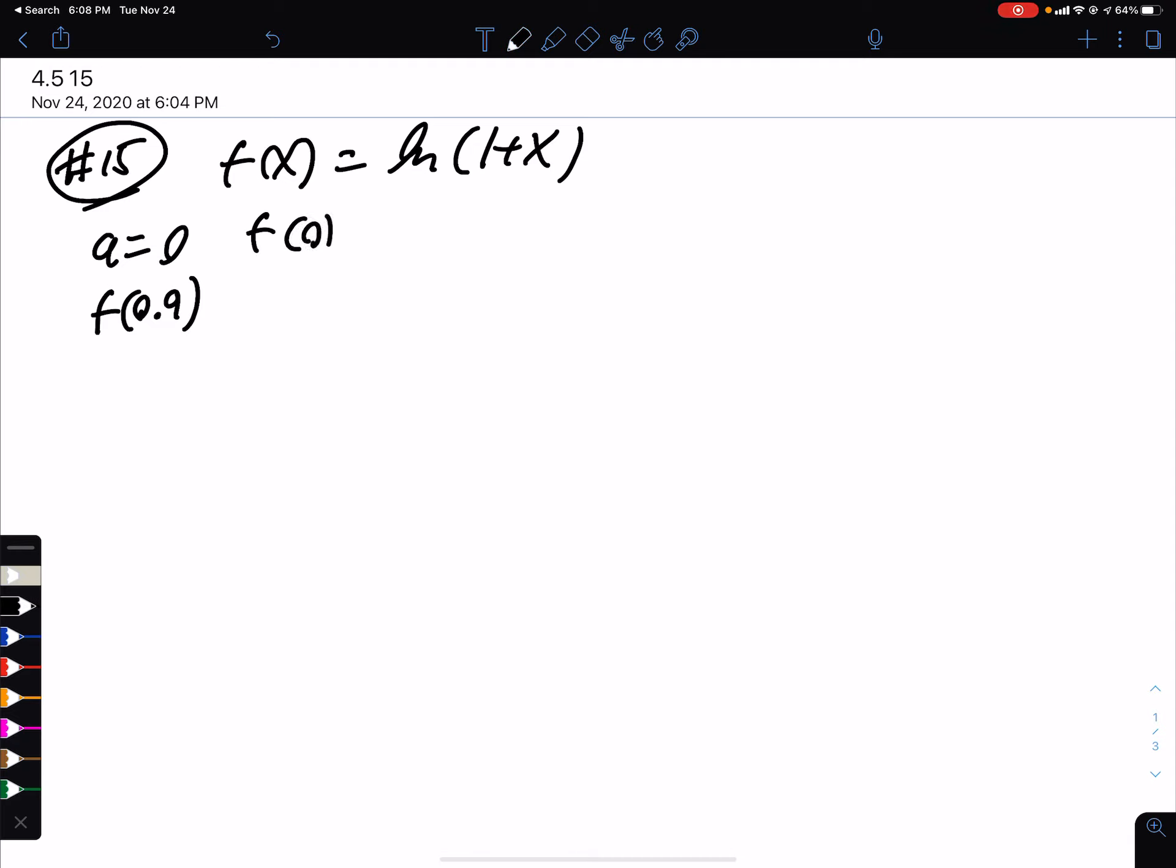So f of 0 is ln of 1 plus 0, which is ln of 1, which is 0. So we know the point of tangency is 0, 0.